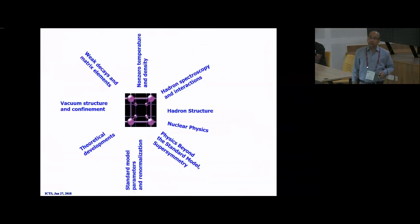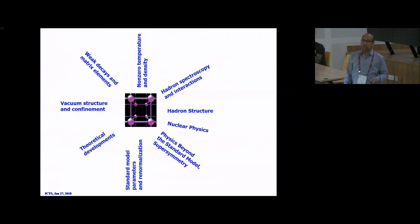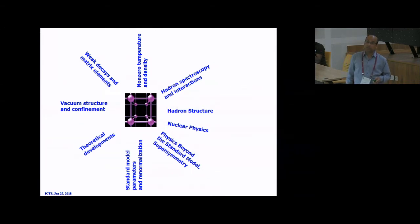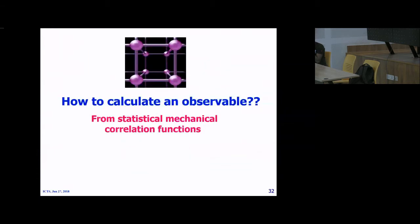On the lattice we are calculating hadron structure, nuclear physics, physics beyond the standard model and supersymmetry, standard model parameters, weak decay matrix elements, and non-zero temperature and density. Lots of theoretical developments are also happening. Now I will show how to get the observables — these come from statistical mechanical correlation functions. We can write observables in terms of the partition function and path integral.